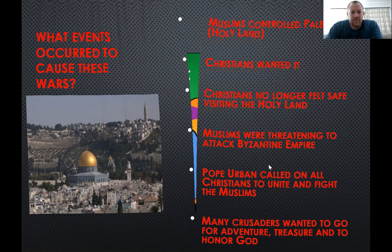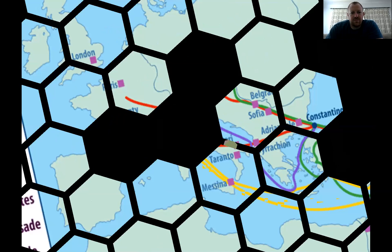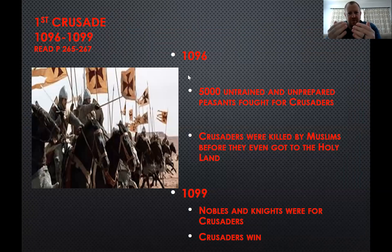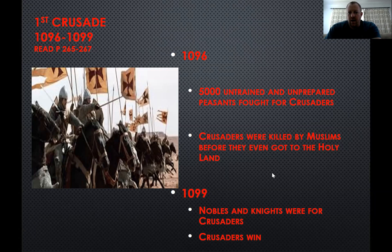The First Crusade — you can see a map of where they go and how they get there. In 1096, 5,000 untrained, unprepared peasants went. They thought they could win riches and glory — and if you're a peasant, you don't really have any money. They thought that not only would they be granted salvation, but they would also be paid. These Crusaders were killed by Muslims before they even got to the Holy Land. Three years later, nobles and knights were the real Crusaders, and the Crusaders actually do win — they do take the city of Jerusalem.